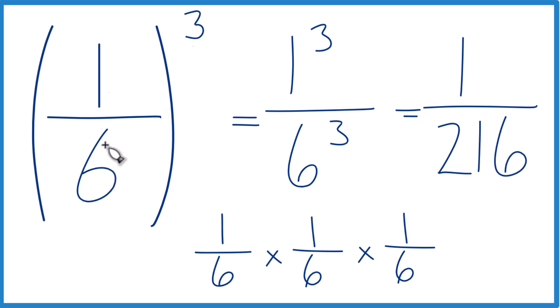So 1/6 to the third power equals the fraction 1 over 216. It makes sense because we're multiplying a fraction by a fraction by a fraction here, and we end up with a smaller number. This is smaller than 1/6.